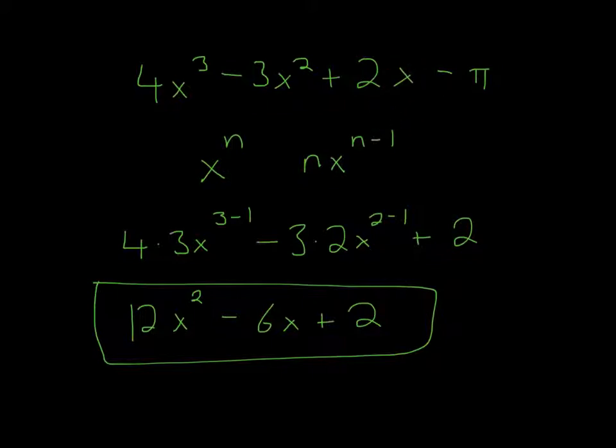Here, the x goes away, because if you think about it, it's 1, right? The 1 would come down, so it'd be just 2 times 1, and then it'd be 1 minus 1, right? 1 minus 1 is 0. Anything to the 0th power would just be 1, so then it would just be plus 2.